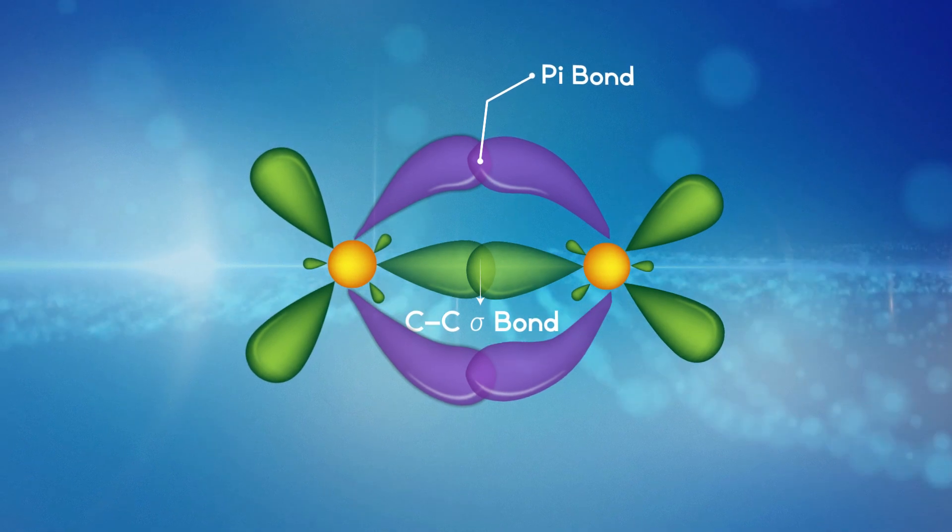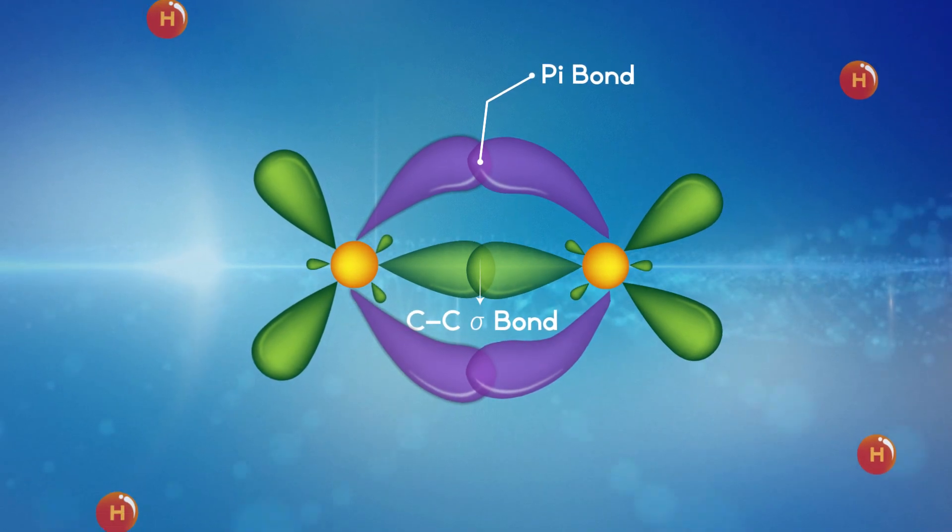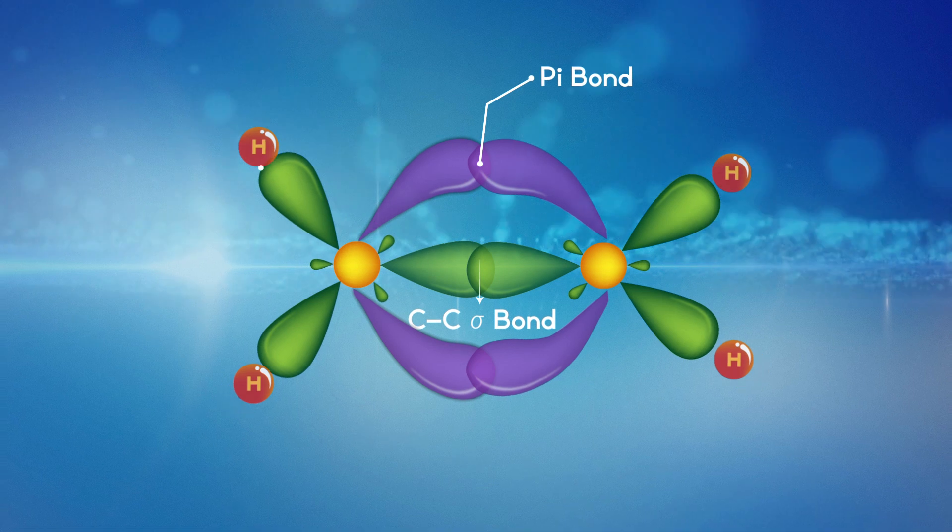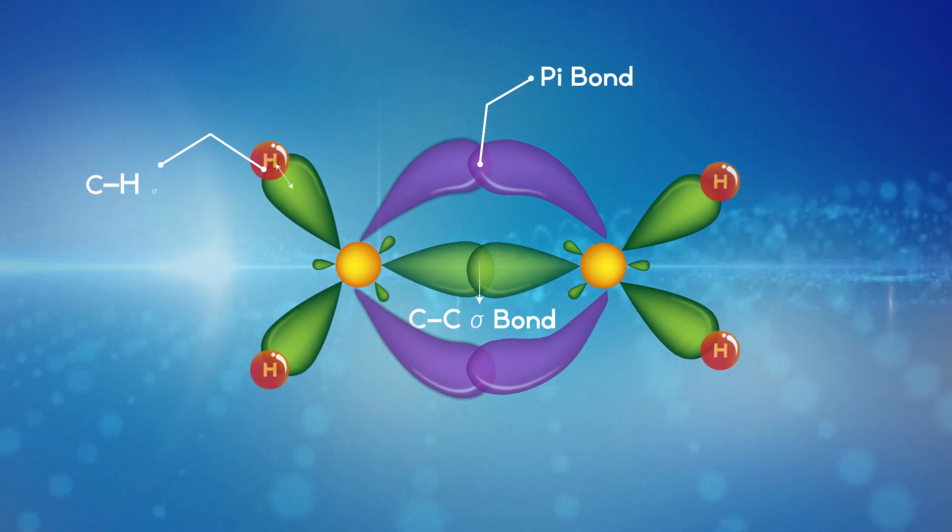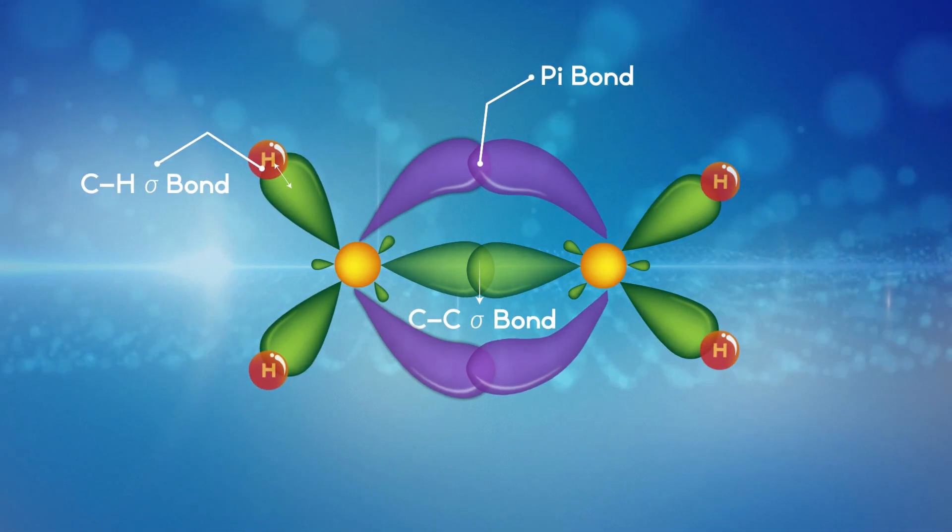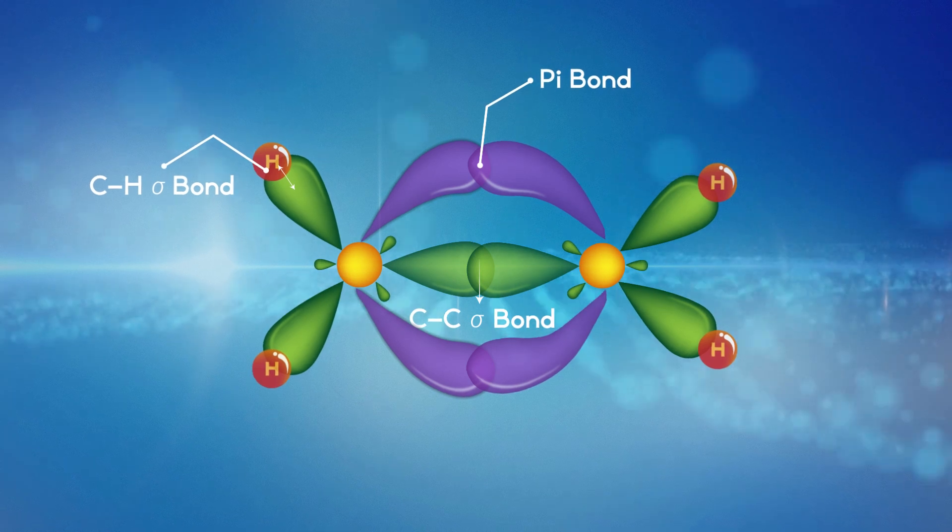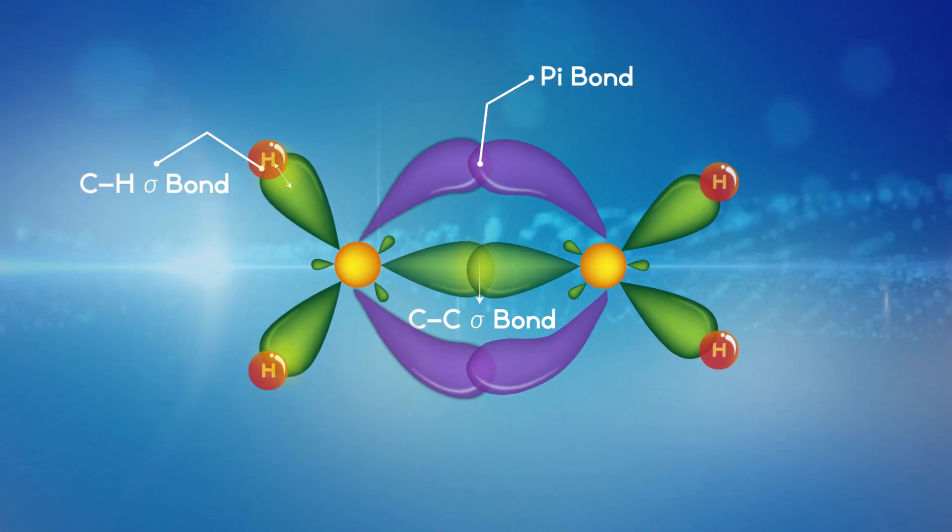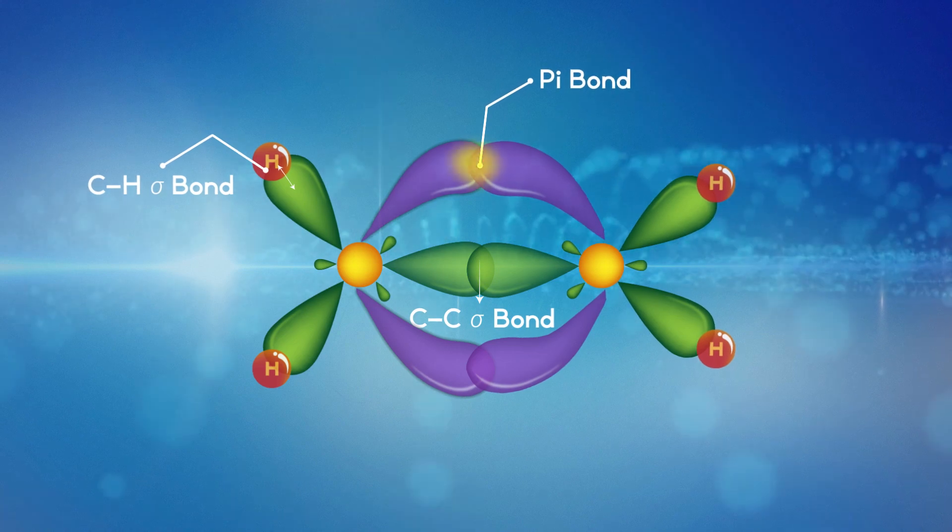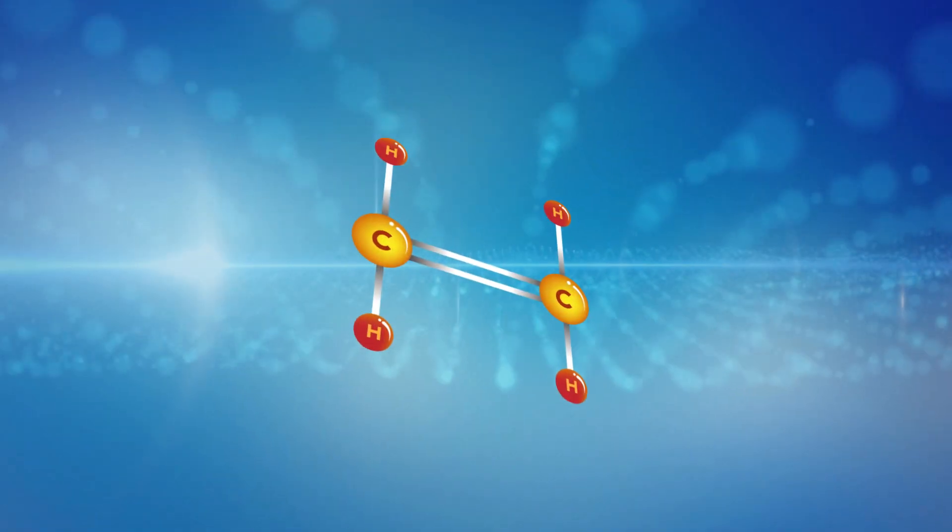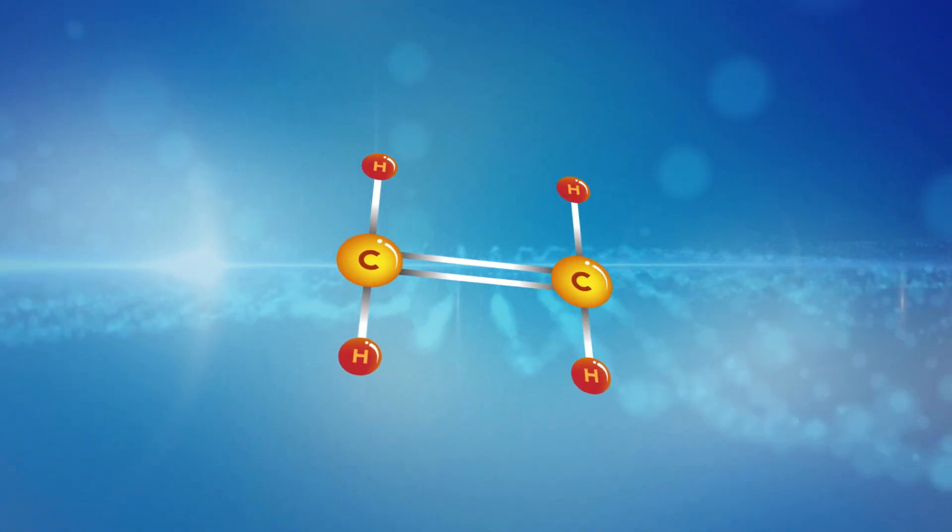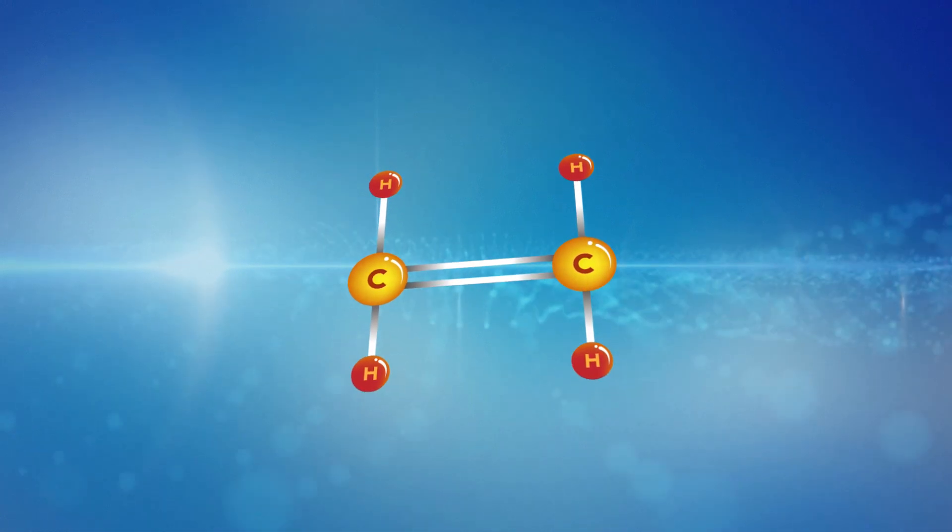The remaining sp2 hybrid orbitals form carbon-hydrogen sigma bonds with the hydrogen atoms. Hence, in sp2 hybridization, three sigma bonds and one pi bond are formed. This hybridization results in the formation of an ethene molecule.